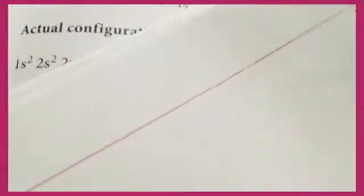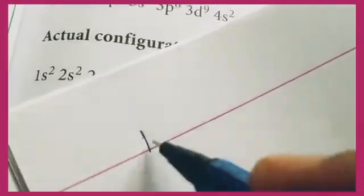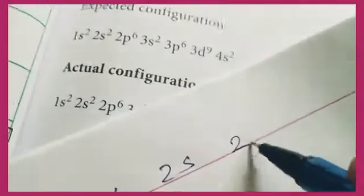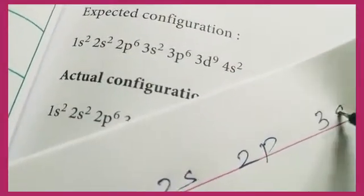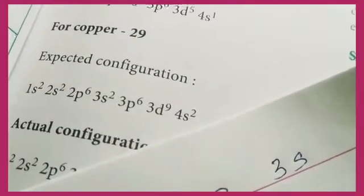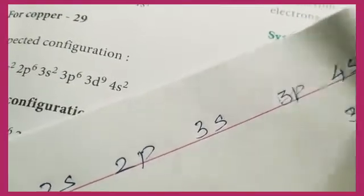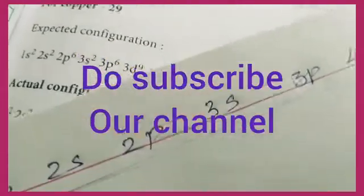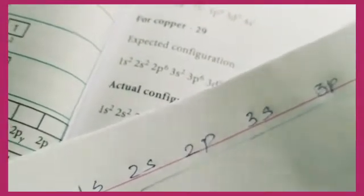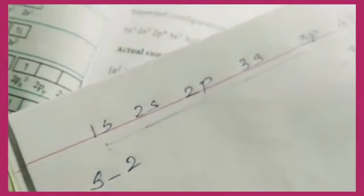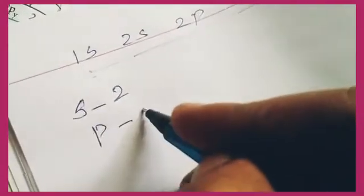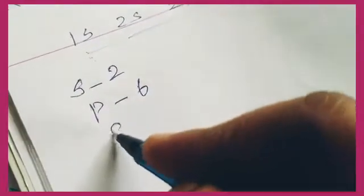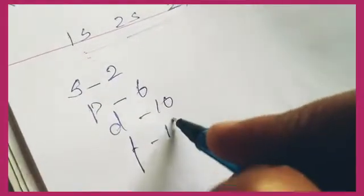Before getting into the video, we should know how electrons are distributed in different orbitals. The order of filling is: 1s, 2s, 2p, 3s, 3p, then 4s, and then 3d. This is the order of filling electrons in different orbitals. For s, we fill 2 electrons; for p, 6 electrons; for d, 10 electrons; and for f, 14 electrons.